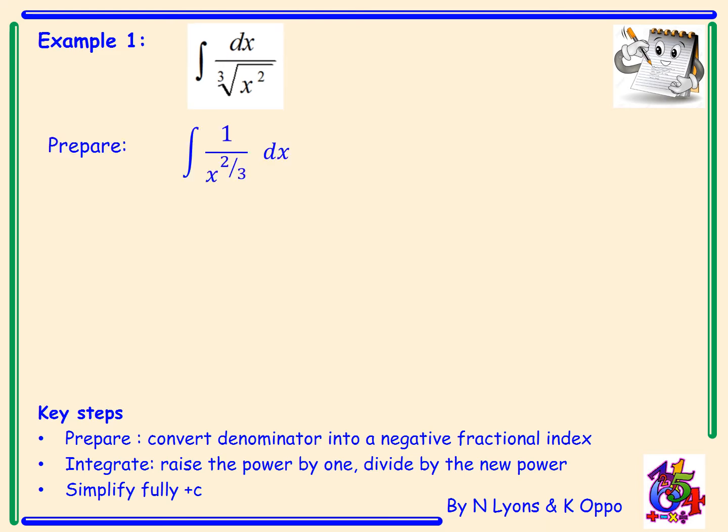So first to prepare I've got the integral of 1 over x to the power 2 over 3 with respect to x which is the same as the integral of x to the minus 2 over 3 with respect to x. And now it's just simple. When we integrate we're going to add 1 on to minus 2 over 3.